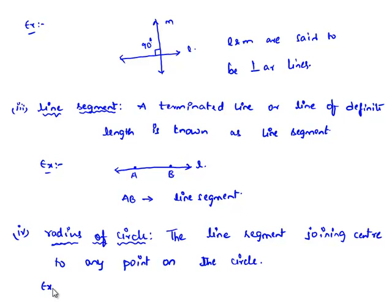For example, if we consider a circle with center C, then any line segment joining the center to the circumference of the circle, or any point on the circle, is called the radius.